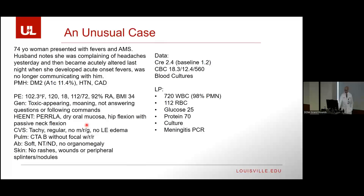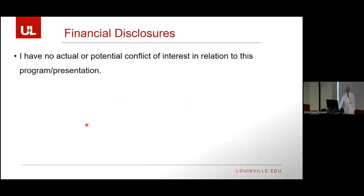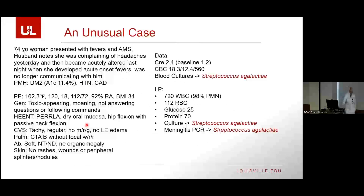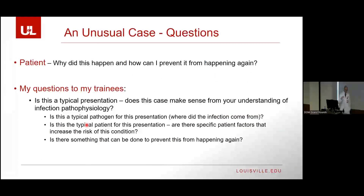As part of the workup you get a meningitis PCR and blood and CSF cultures. When those come back, the PCR identifies Streptococcus agalactiae, and the blood and CSF cultures also grow Streptococcus agalactiae. When we encounter these patients on rounds, the first thing the family wants to know is why did this happen and how can I prevent it from happening again? Because unlike other medical conditions, infections tend to be sudden and a little bit nebulous to families.